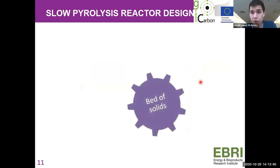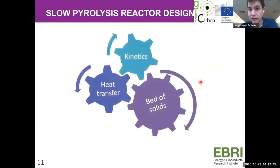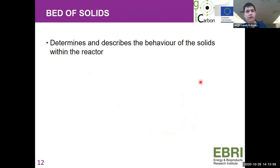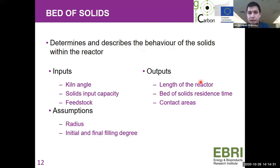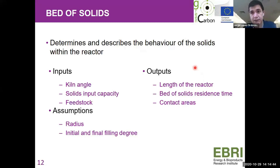The three aspects — bed of solids, heat transfer, and kinetics — must be fully integrated into the model to ensure good performance and that transformation into the product is achieved. The bed of solids sub-model determines and describes the behavior of solids within the reactor. Given the kiln angle, input capacity, feedstock, and assumed radius, along with initial and final filling degree, it outputs reactor length, residence time, and contact areas. The contact areas may not seem critical here, but they are absolutely critical in the heat transfer part.